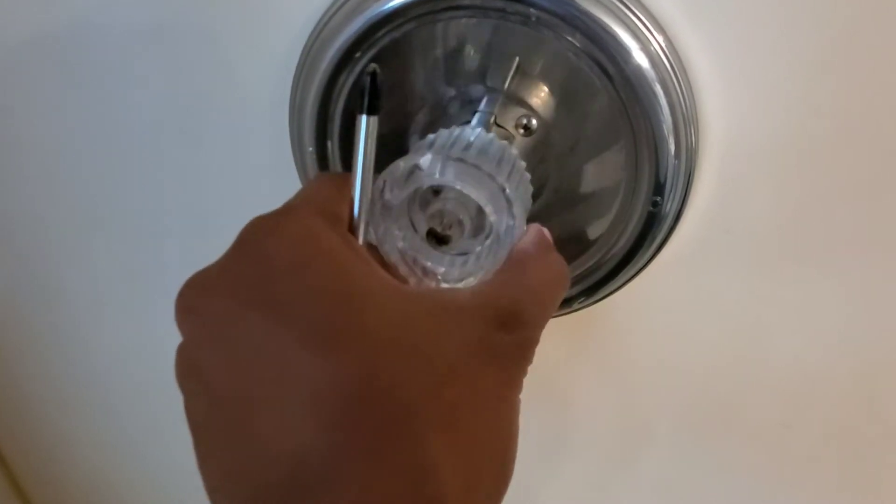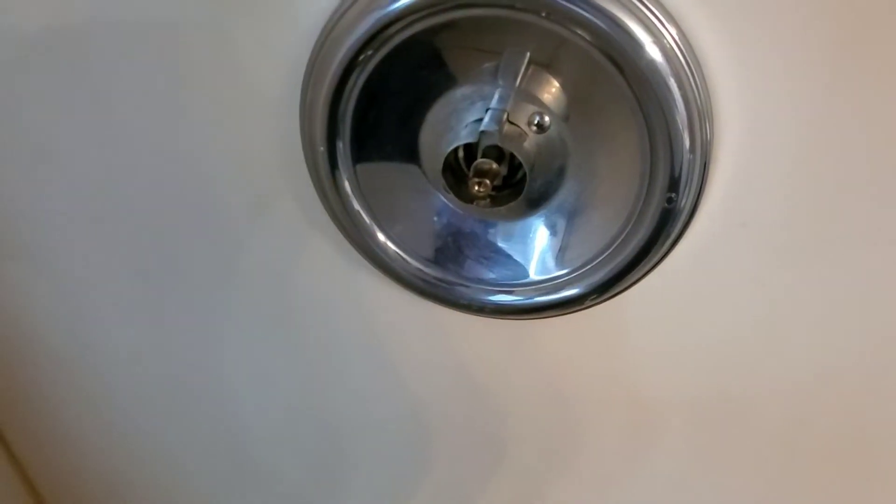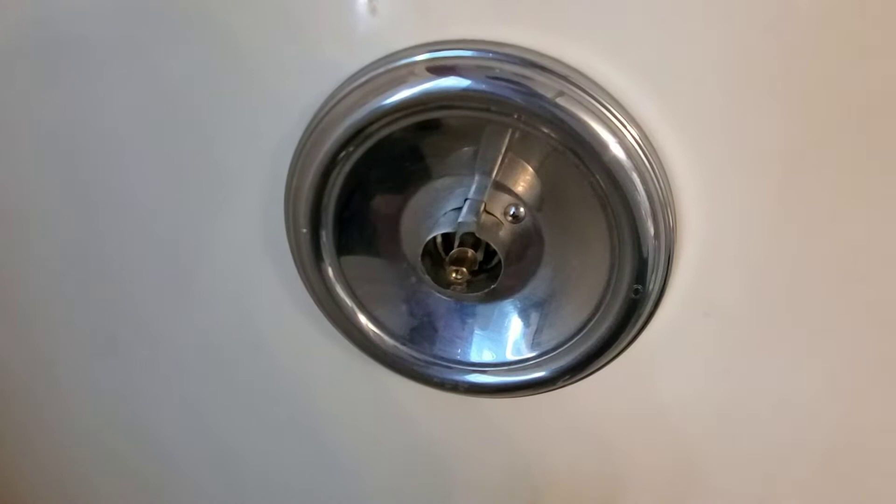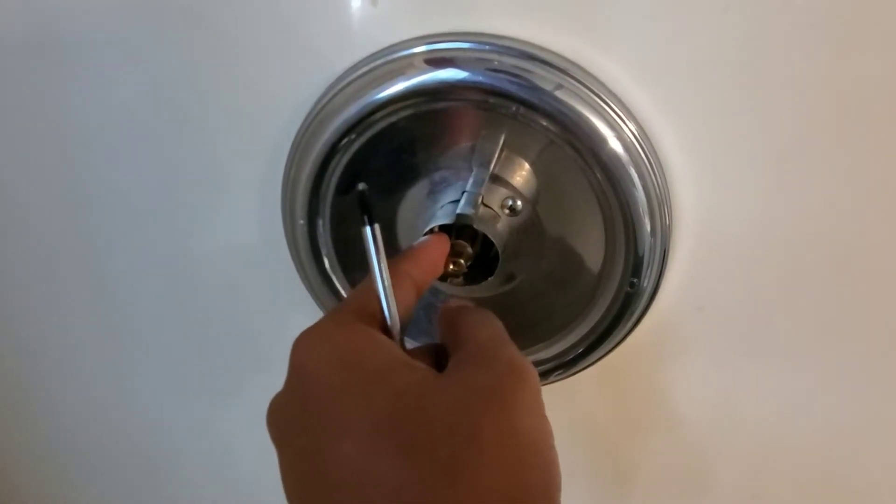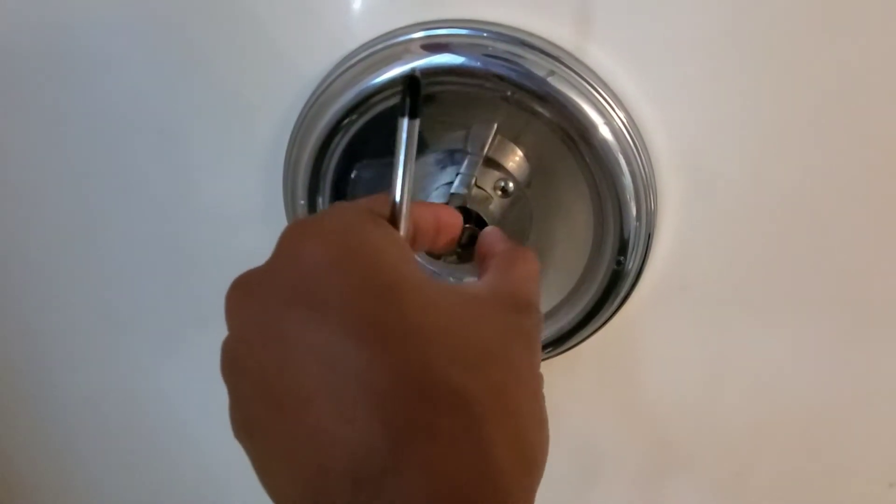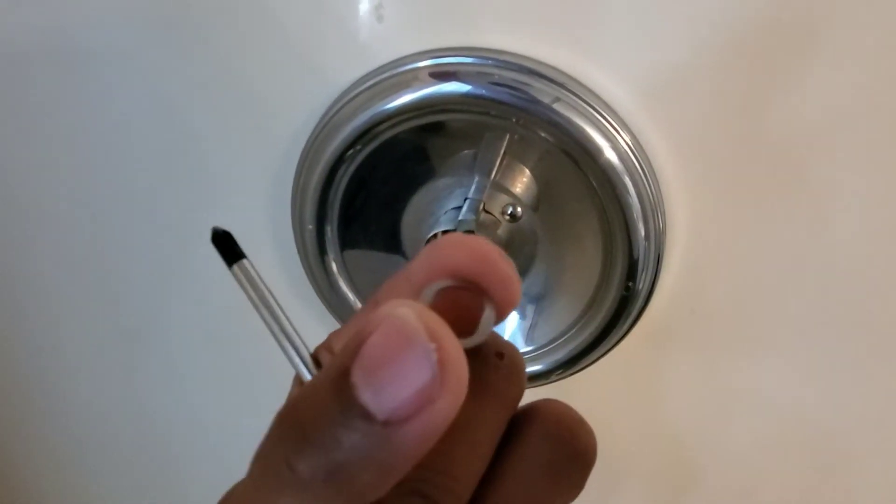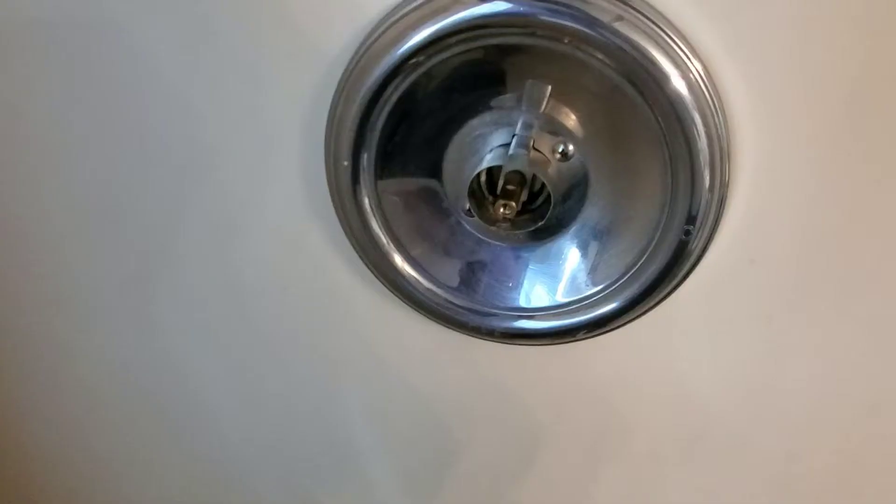Once you remove the knob, there's a spacer right behind the knob or it kind of looks like a washer. Take that off. Next, you're going to take those two screws out of the plate and remove the plate.